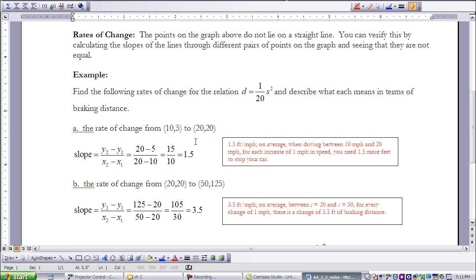So 20 minus 5 is 15. 20 minus 10 is 10. So that means that when I'm looking at the difference between 10 miles per hour and 20 miles per hour, my rate of change between those two points is 1.5. So what does that mean? You'll see over here in red, 1.5 feet per mile per hour on average when driving between 10 miles per hour and 20 miles per hour. For each increase of 1 mile per hour in speed, you need 1.5 more feet to stop your car.